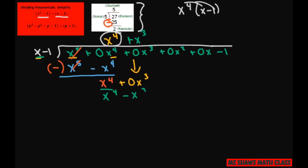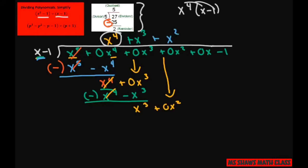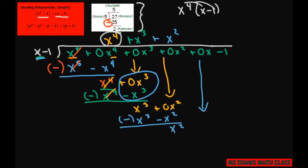When you subtract, this cancels out and you get x cubed. Bring down the next term and keep proceeding — what times x gives you x cubed? That's going to be x squared. Now you see why we have the placeholders, because you need something to subtract from. This gives x cubed minus x squared; subtract and you get x squared. Bring down the 0x.